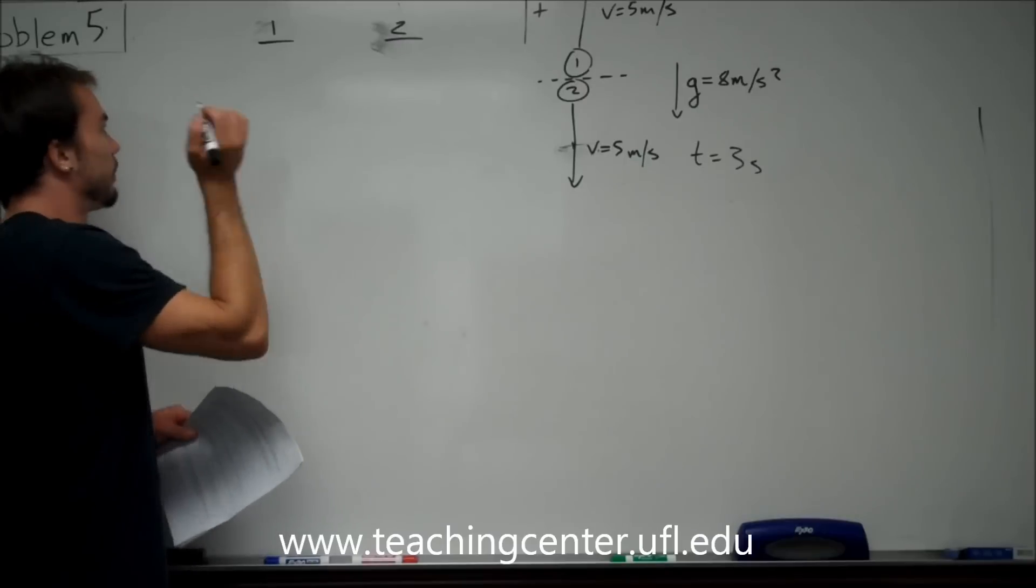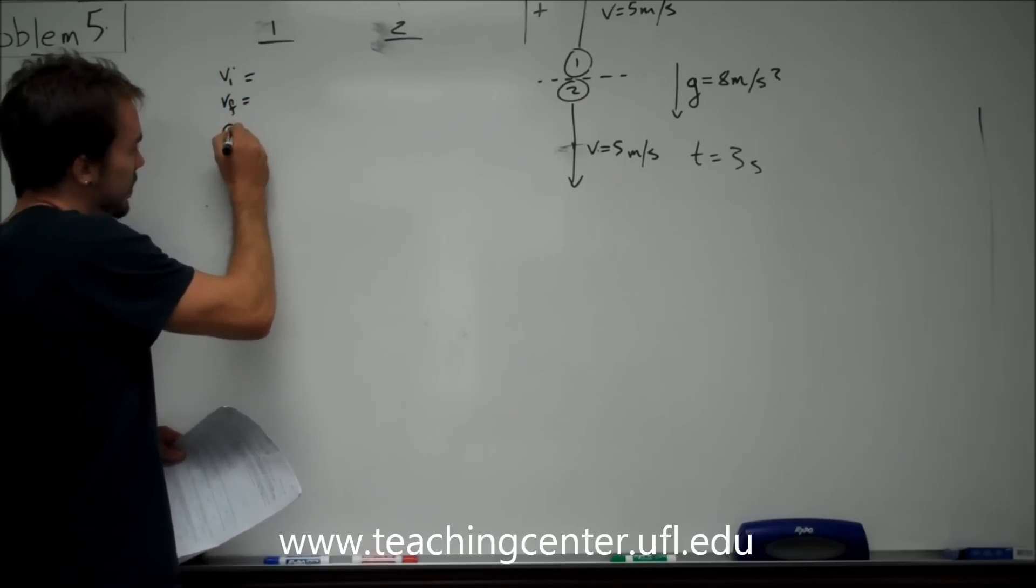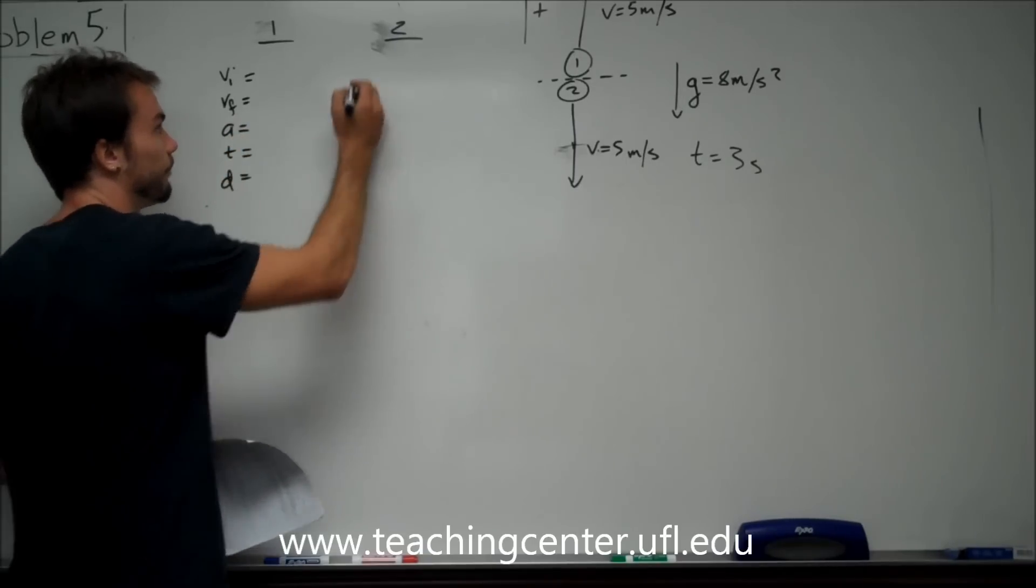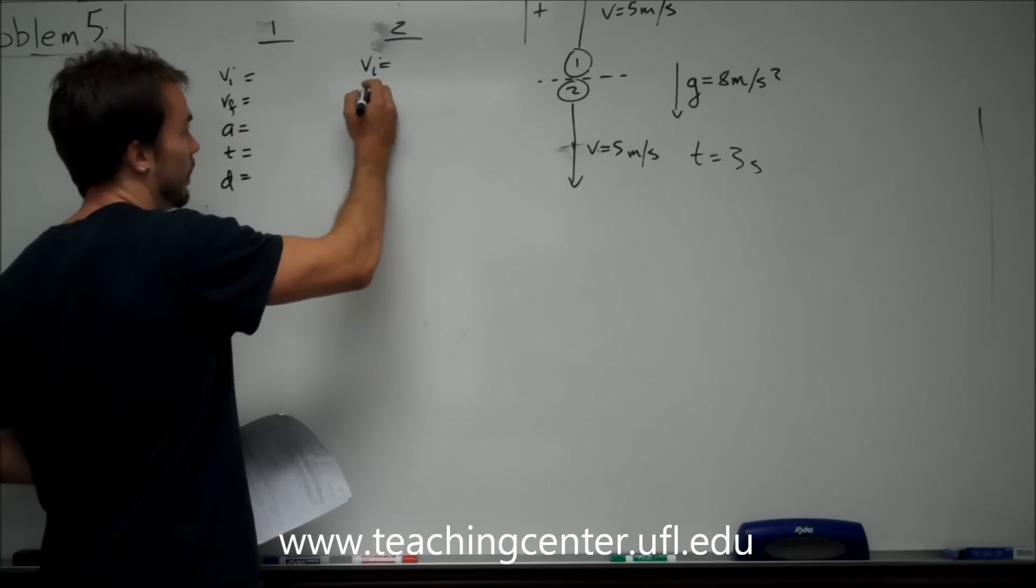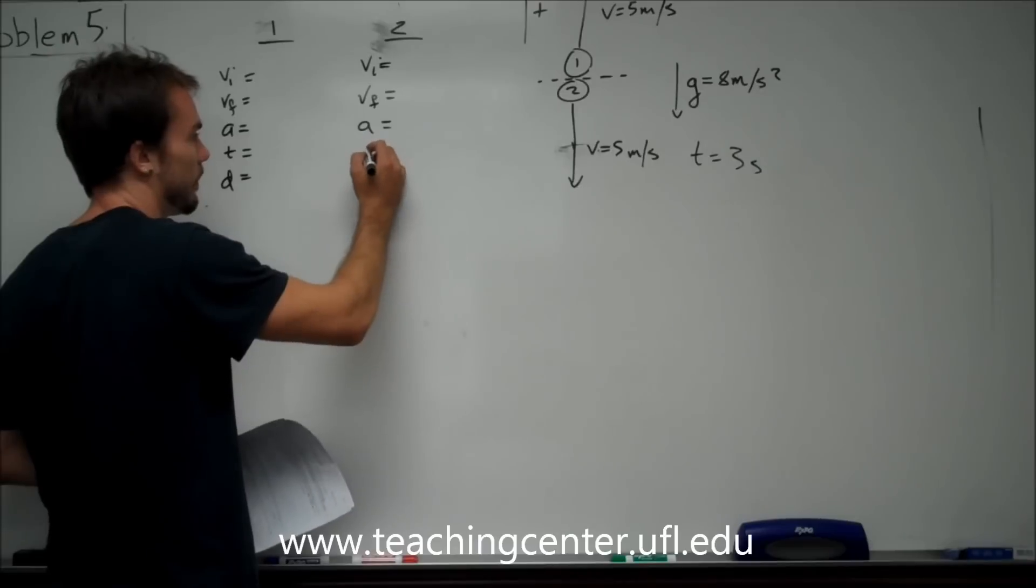So, the variables we can have. We can have an initial velocity, we can have a final velocity, we have an acceleration, time, and a displacement. And any kinematics problem with an acceleration, you have these 5 variables.